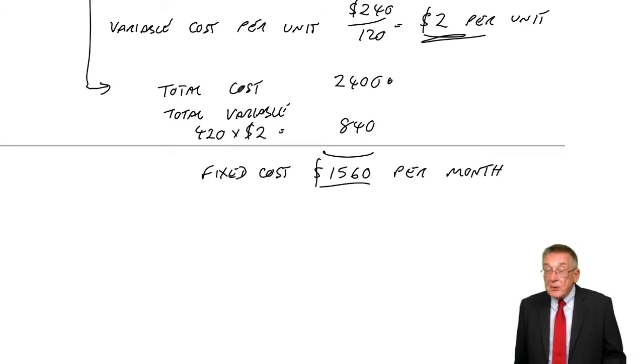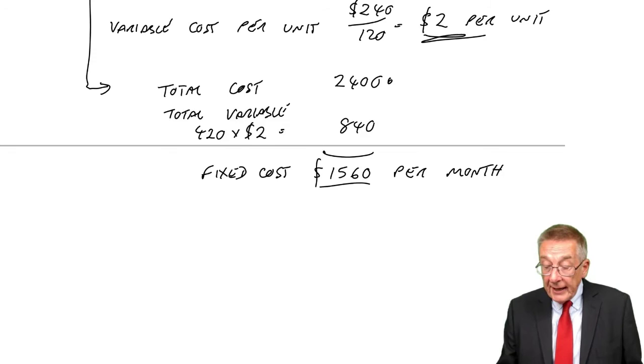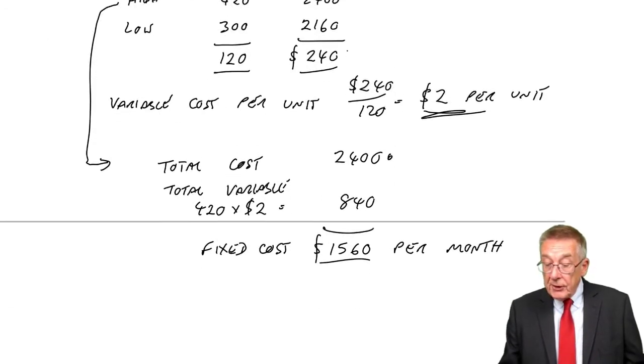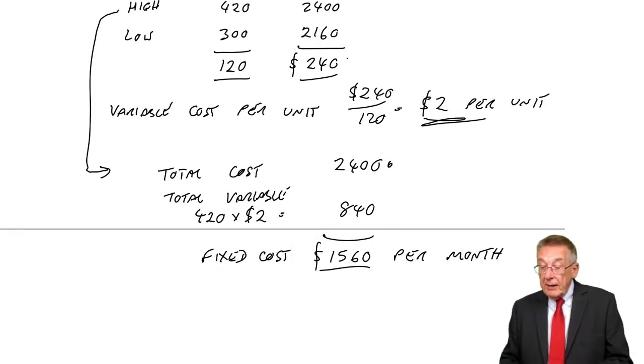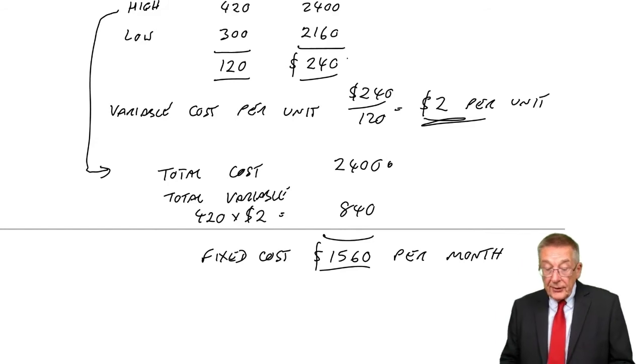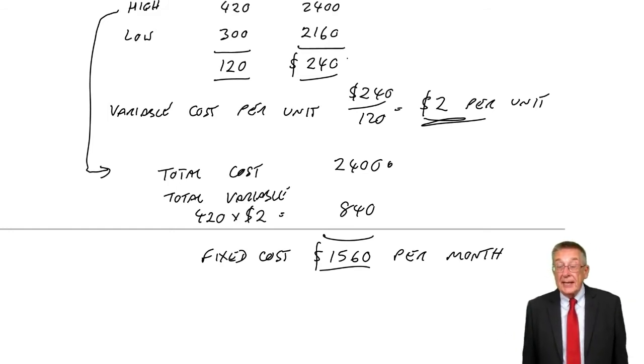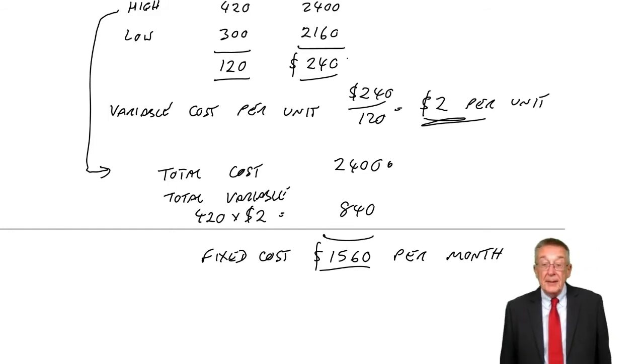I did say, but you mustn't waste time in the exam. You'll be under time pressure. You can check that if you look at the low one. The low one is 300 units. Well, at a variable cost of two dollars, that would give 600. Add on the fixed costs of 1560. And there we are, 2160. But don't waste time in the exam, however quick it seems.